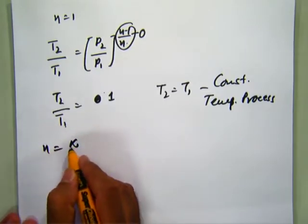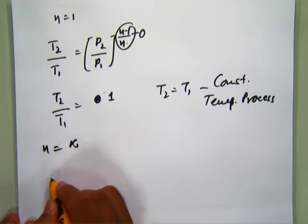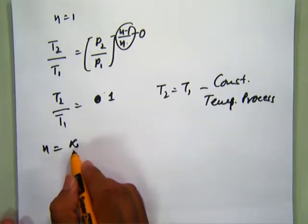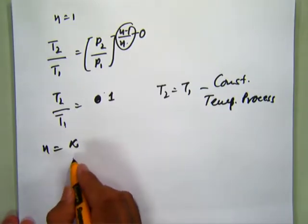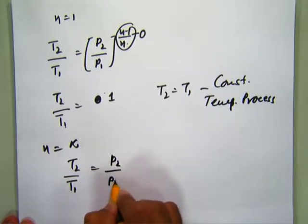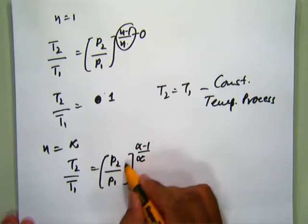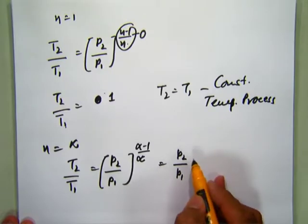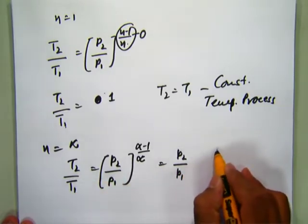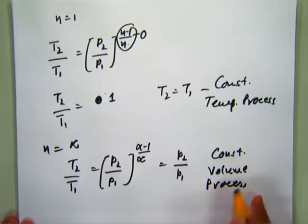When n equals infinity, putting this in the equation T2/T1 = (P2/P1)^((n-1)/n): as n approaches infinity, (n-1)/n approaches 1, so T2/T1 = P2/P1. This is your constant volume process.